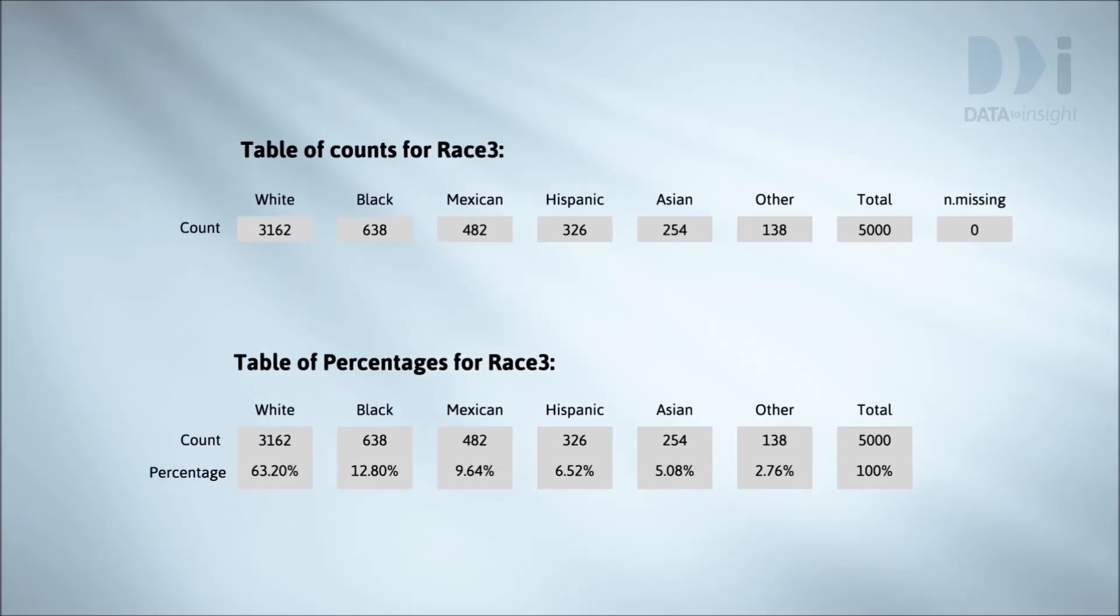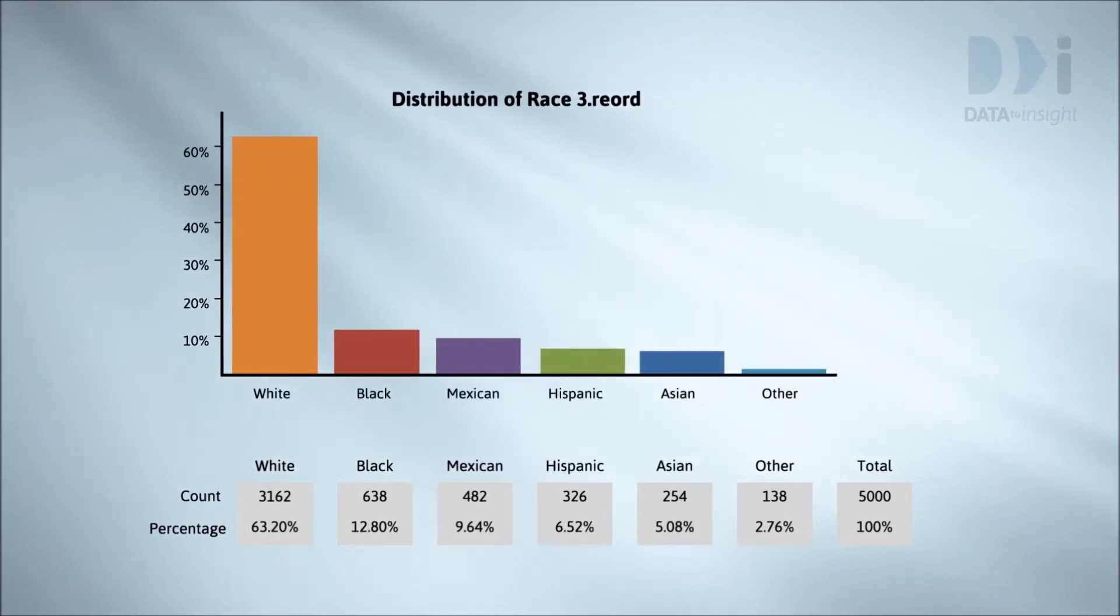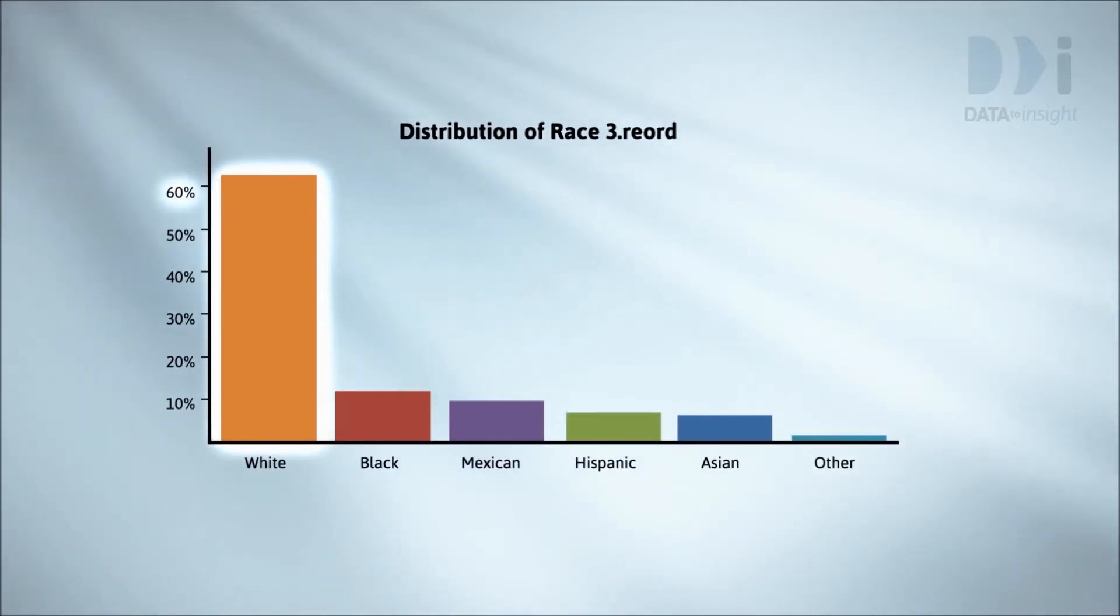Here is a table giving the counts and percentages for race 3. The percentages are plotted here using a bar chart. The fact that white is by far the most common category jumps out at us from the graph. From the scale, we see that over 60% of our people have been classified white. The next most common category is black at about 12%, closely followed by Mexican, Hispanic, and so on.